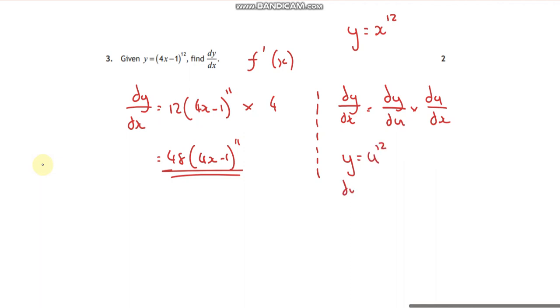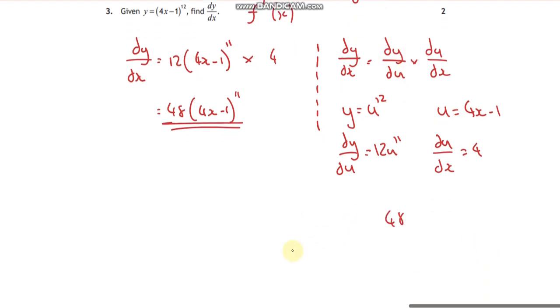I would differentiate that and say dy by du is equal to 12u to the 11. And I would also say, okay, well u is 4x take away 1, because that's what the bracket is. And if I differentiate that, if I say du by dx, differentiating that with respect to x is going to give me 4.